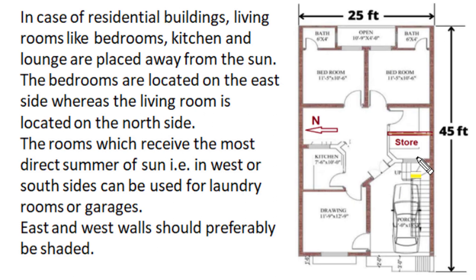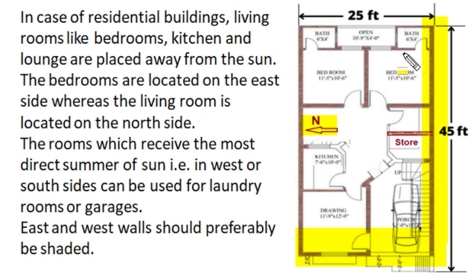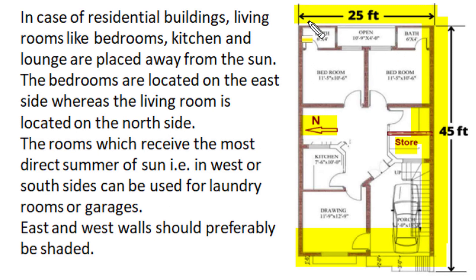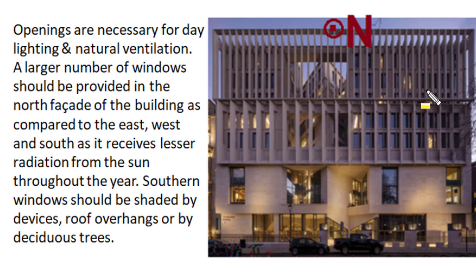Southern sides with appropriate shading also become very useful. In a residential building or office space, living rooms where inmates spend maximum time — such as kitchen, bedroom, lounge, and drawing halls — should be placed away from the sun. The north face, west face, and south face get more sun exposure. Bedrooms can be placed on the east side, while other living spaces like kitchens, drawing halls, and living rooms can be placed on the northern side. Rooms that receive the most direct summer sun — west face and south face — can be used for garages, stores, and laundry spaces.